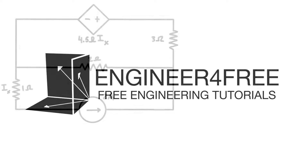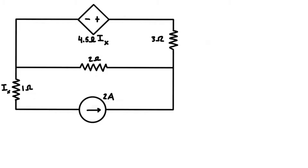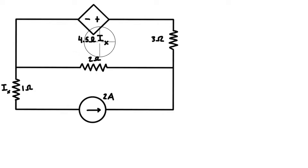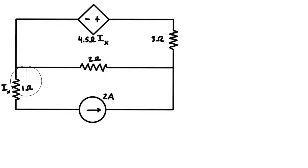Welcome back. We're going to go over an example with a current controlled voltage source. We want to figure out the voltage drops across every element, the power dissipation, and power delivery in each element, and then compare those to verify our answer. We'll use Ohm's law, KCL, and KVL to come up with the solution.